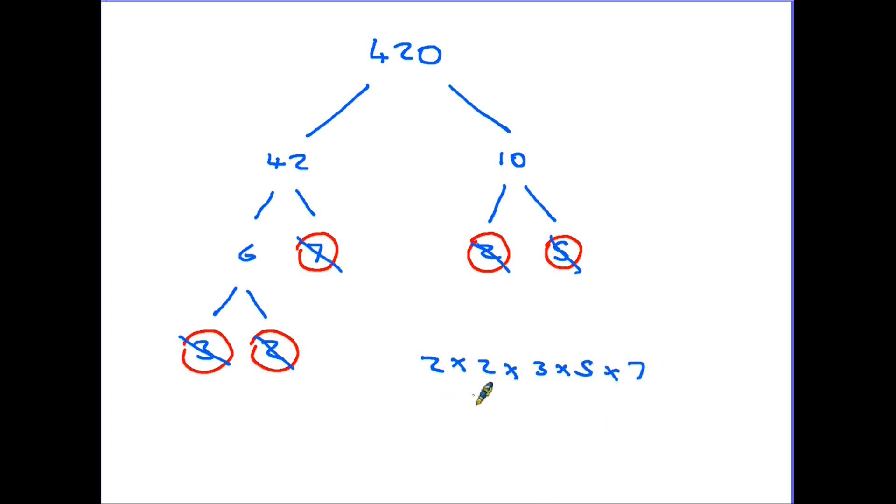I also spot that I have a pair of 2s here. So again 2 times 2 is 2 squared. So the full answer is 2 squared times 3 times 5 times 7.